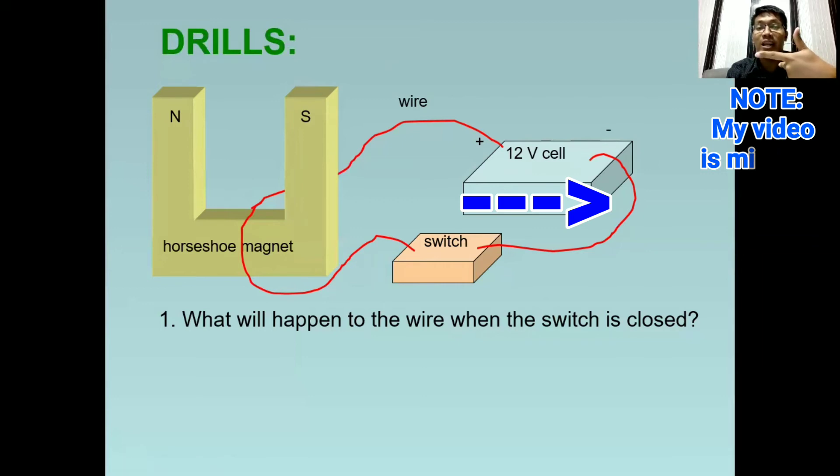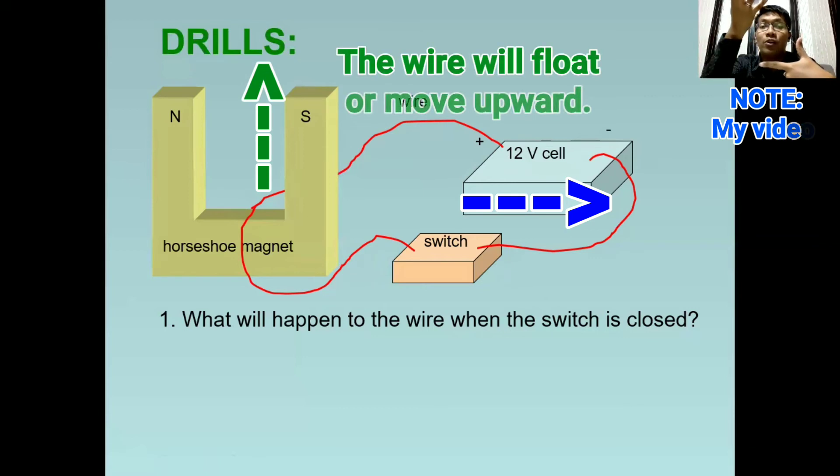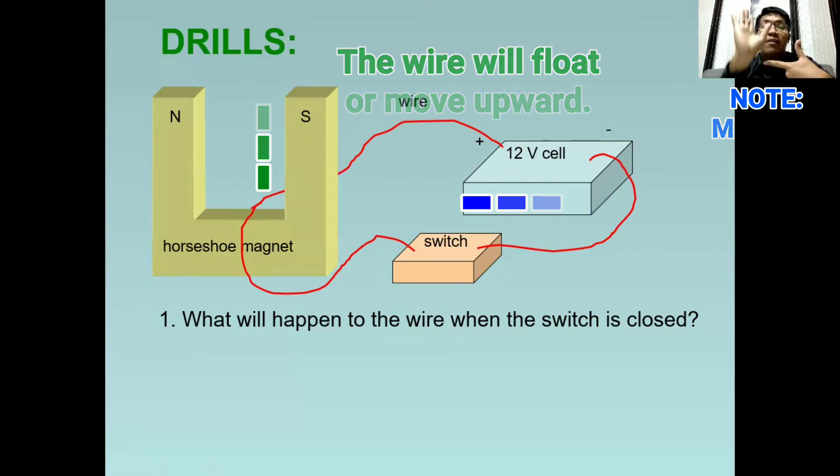And therefore, the direction of force will look like this. So it is upward. So what will happen to the wire? It will float on the air because constantly it will be pushed by the force.